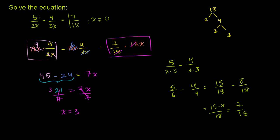So it works out. 5 over 2x, when x is equal to 3, minus 4 over 3x, when x is equal to 3, is indeed equal to 7 over 18. So we're done.